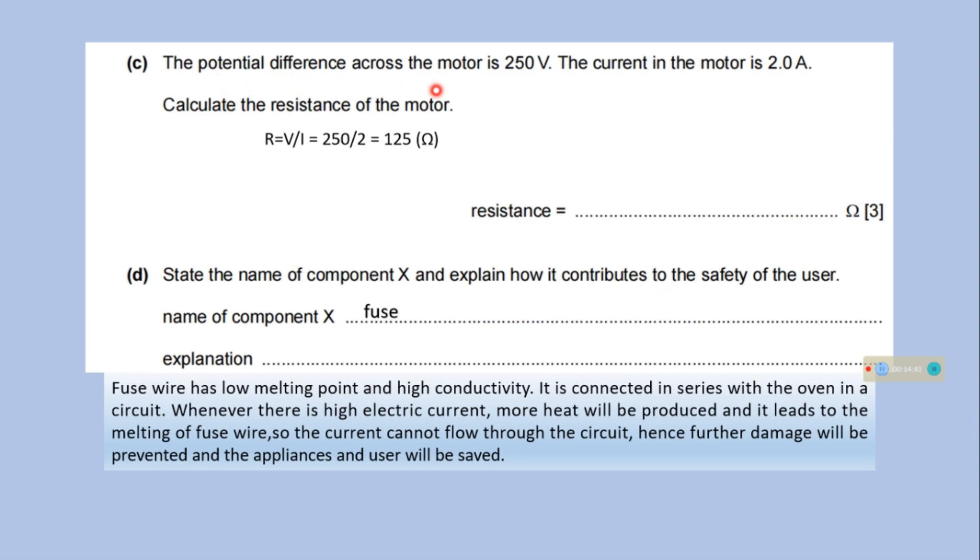The potential difference across the motor is 250 V. The current in the motor is 2 Ampere. Calculate the resistance of the motor. We know that resistance is equal to potential difference divided by current. So it is 125 Ohm.